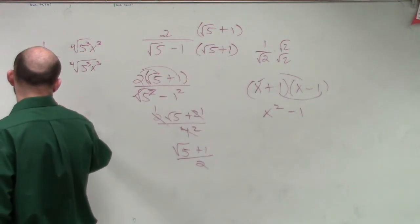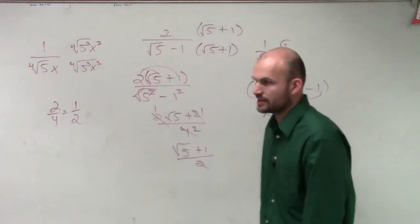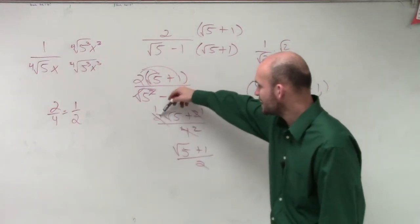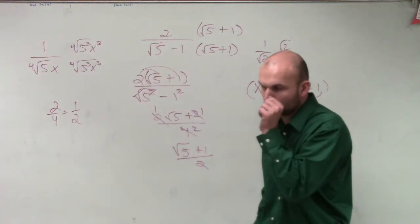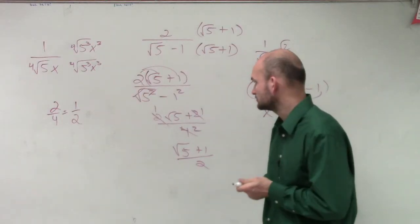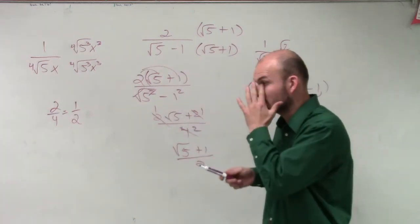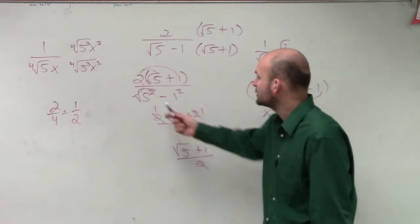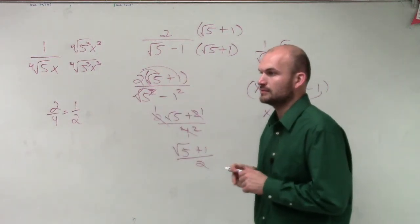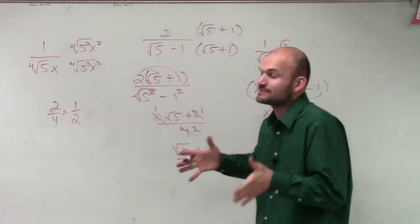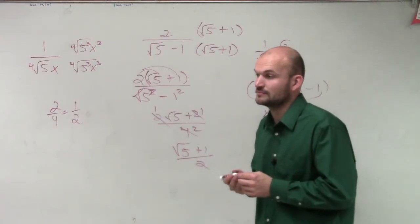What's 2 divided by 4 reduced to? 1 half, right? So all I simply did is I have my 4 divided into both of these, so I can divide both terms by 4. There's no 4. The square root of 5 times the square root of 5 is the square root of 5 squared. The square root of 5 squared is just going to leave you with 5.